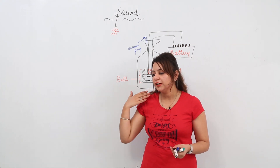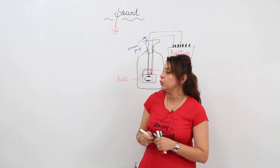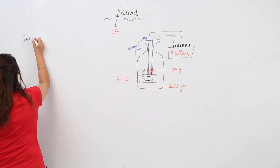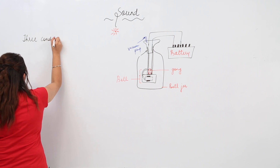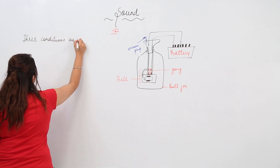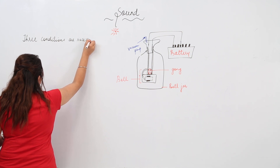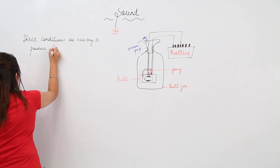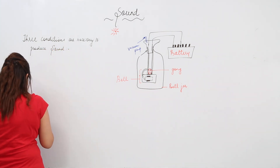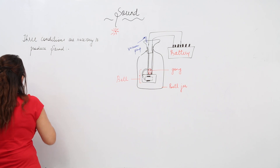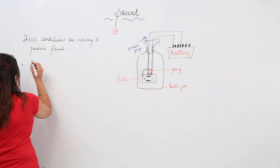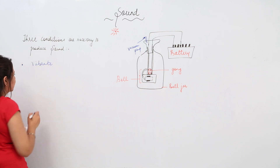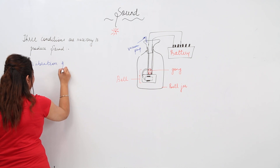In order to produce sound, three conditions are necessary. The first condition is that the body must vibrate — vibration of the body is the first thing which should be there.